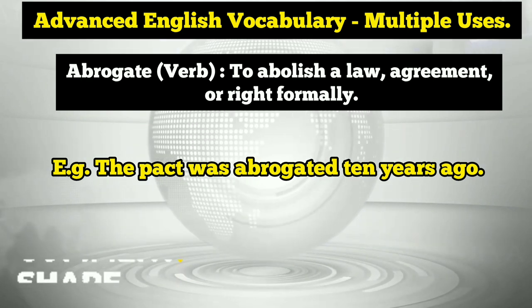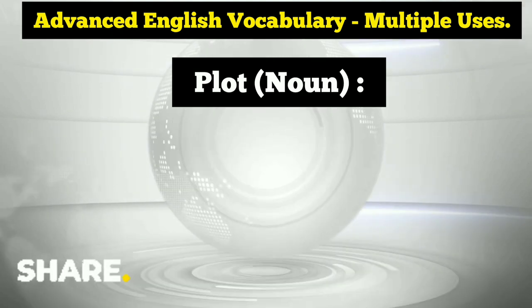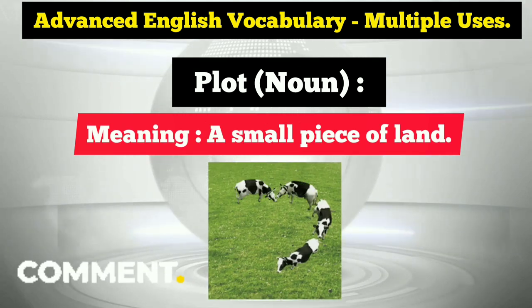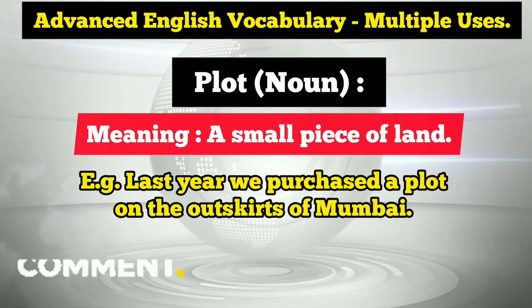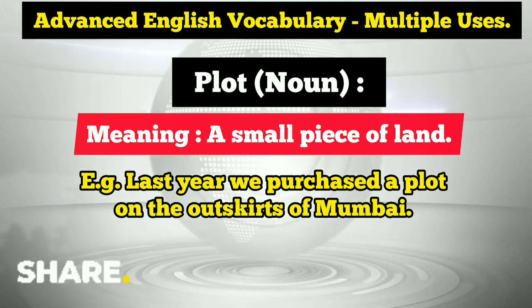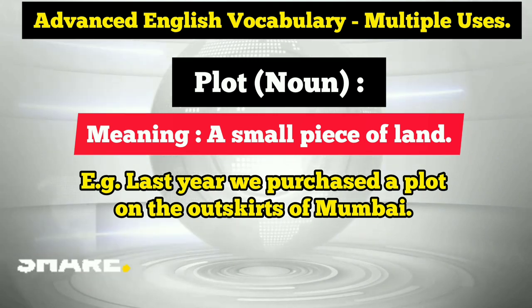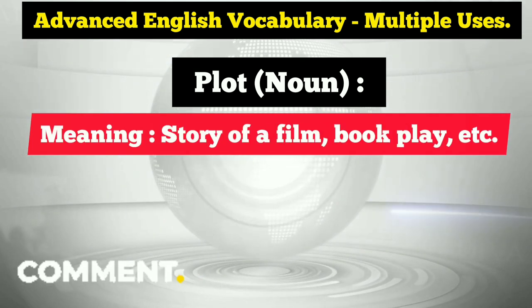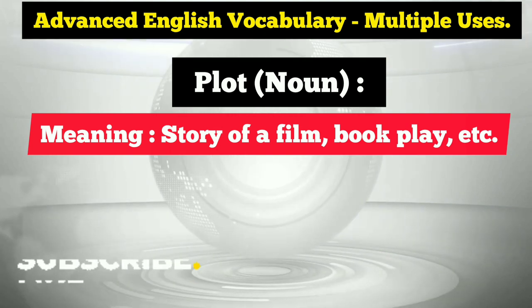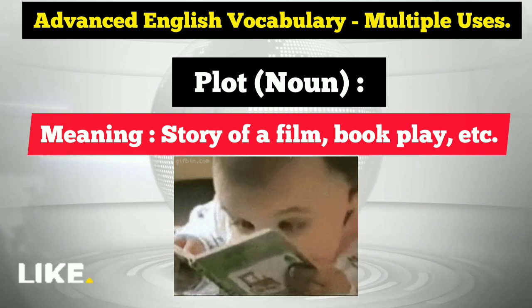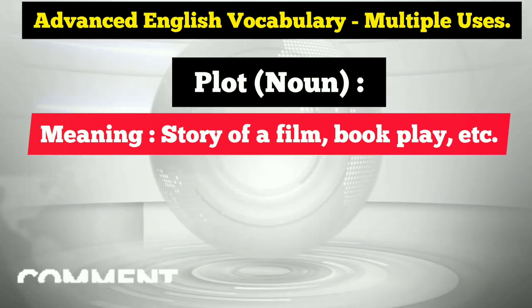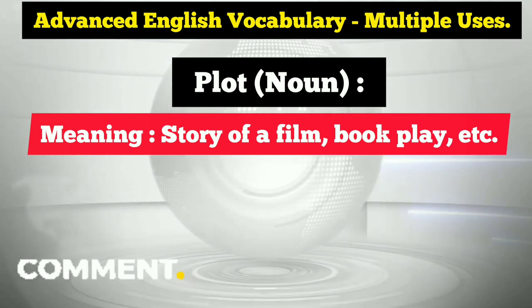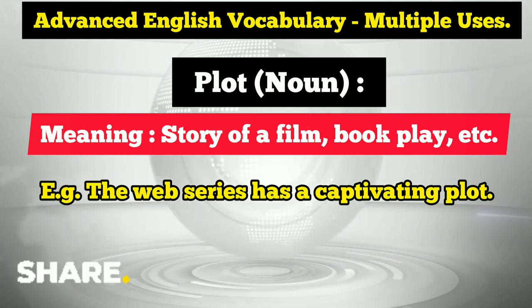Up next is the word 'plot,' which is used in multiple ways. As a noun, the first meaning is a small piece of land — a plot. For example: 'Last year we purchased a plot on the outskirts of Mumbai,' meaning a small piece of land. The second meaning of plot, also used as a noun, refers to the story of a film, book, or play. For example: 'The web series has a captivating plot,' meaning the web series has a very interesting story.